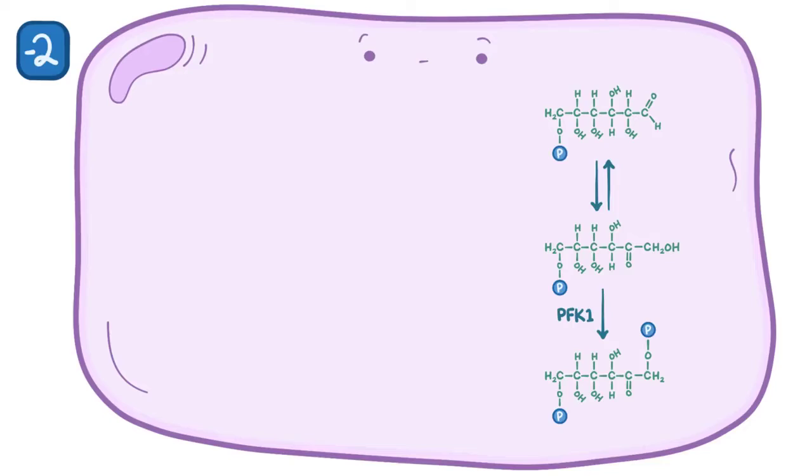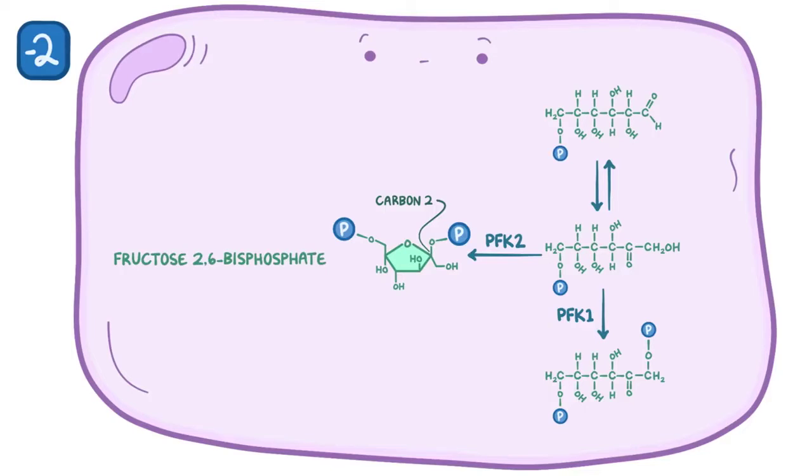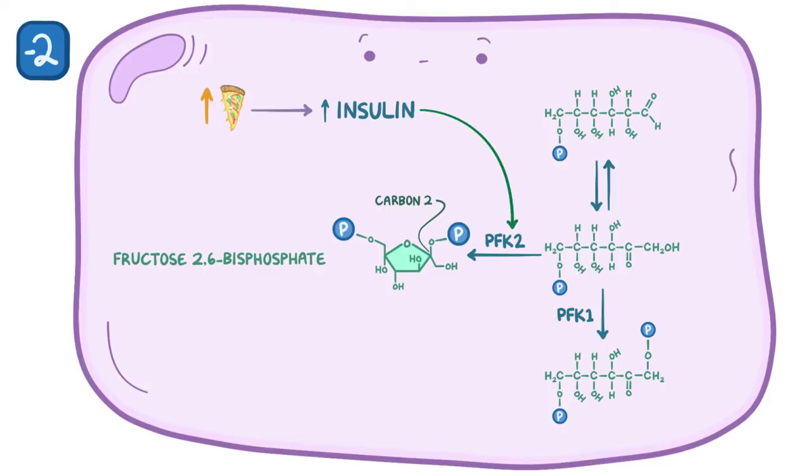Because of this, cells closely regulate PFK1 activity by using another enzyme, called phosphofructokinase-2, or PFK2. PFK2 can also phosphorylate fructose-6-phosphate, but it adds phosphate to the second carbon instead, making fructose-2,6-bisphosphate. PFK2 activity varies depending on the level of glucose in the blood. When the body is well-fed, like right after eating that slice of pizza, blood glucose levels go up and the pancreas secretes insulin, which activates PFK2 and results in more fructose-2,6-bisphosphate.